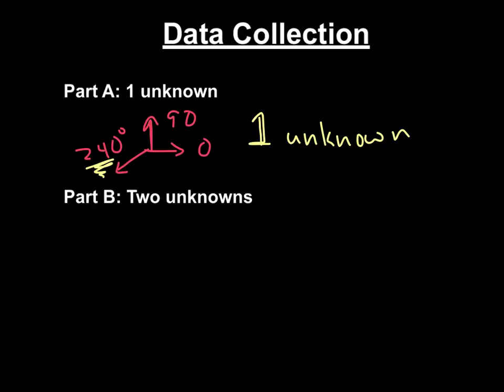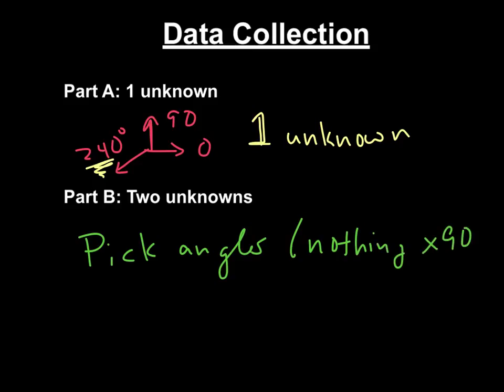Part B, you're going to pick the angles. Pick angles, nothing in a multiple of 90. Nothing on 0. Don't make it too easy. No 120, 240 either. Just make sure your angles are interesting. Because otherwise, if it's all 120 apart, you know they're going to balance.